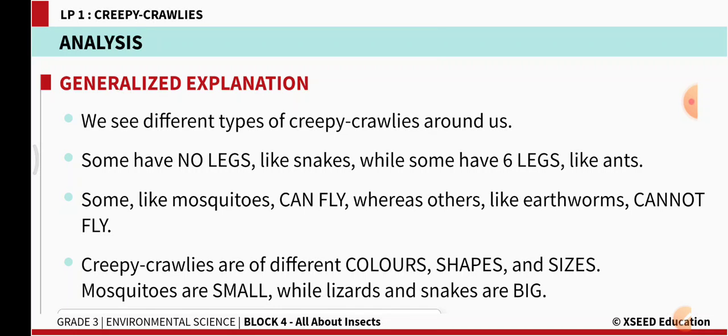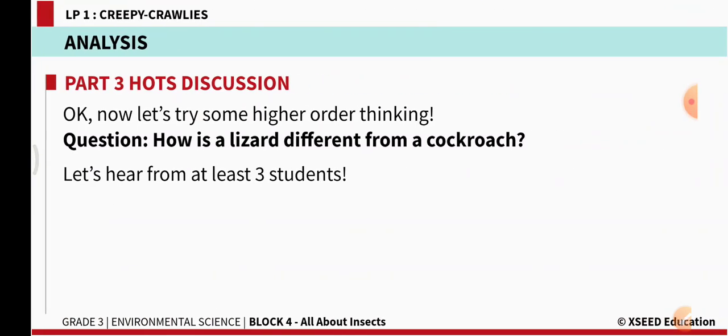Creepy crawlies come in different colors, shapes, and sizes. Mosquitoes are small while lizards and snakes are big.